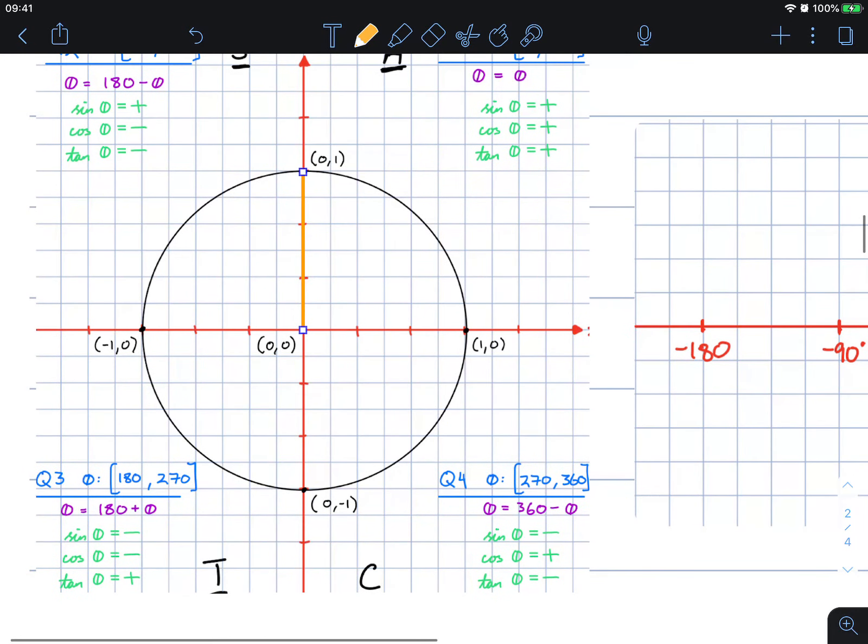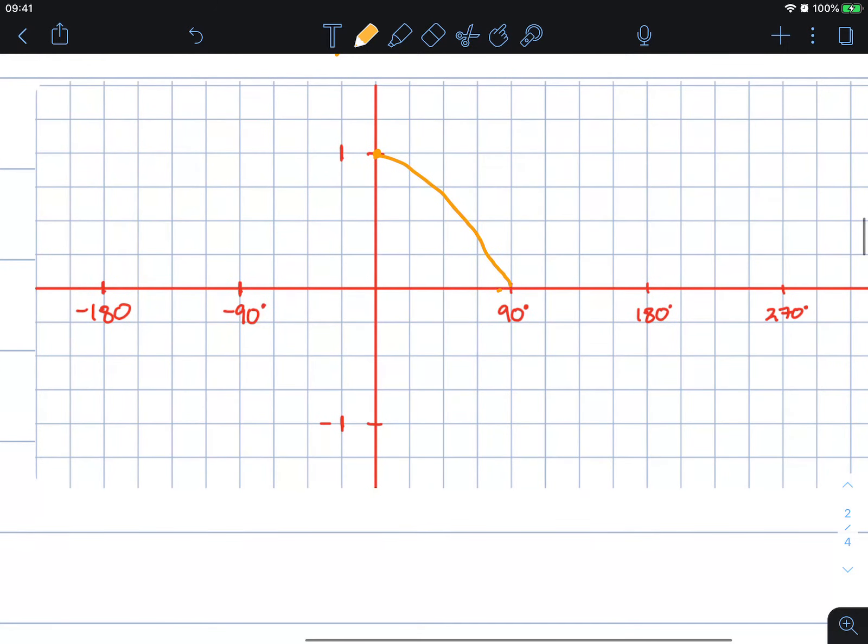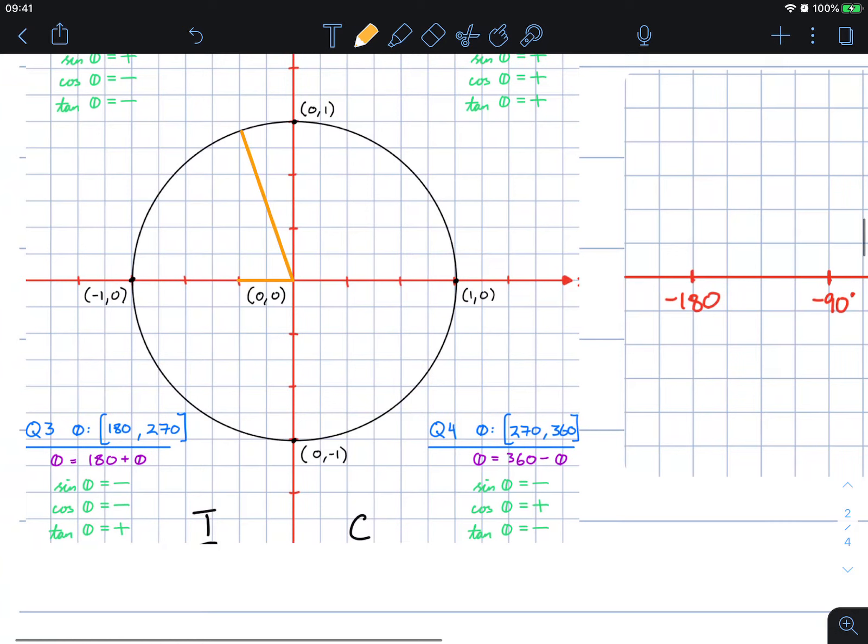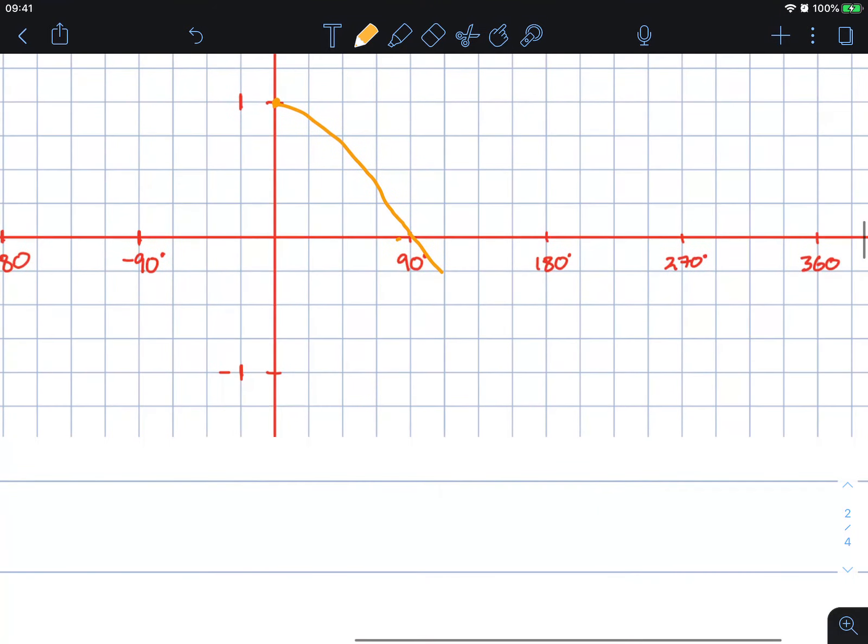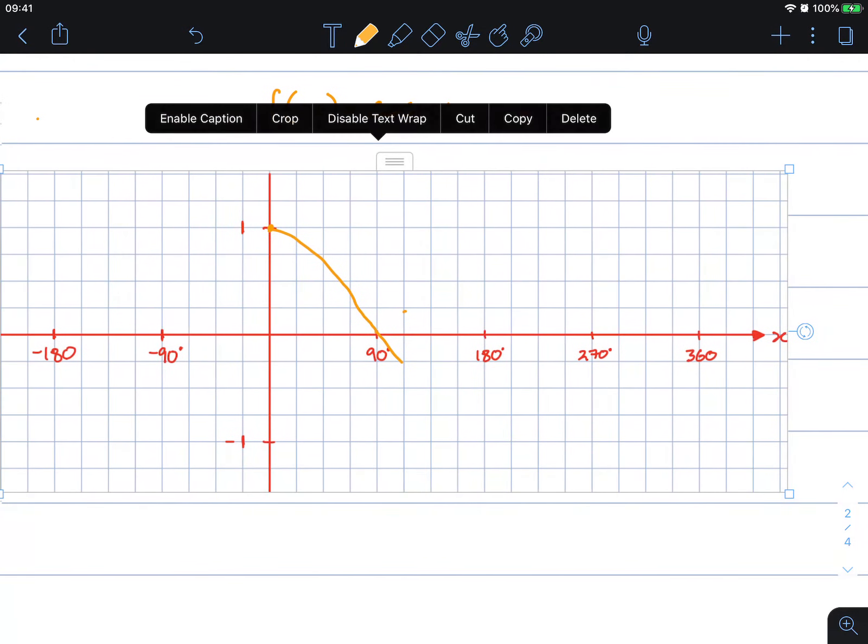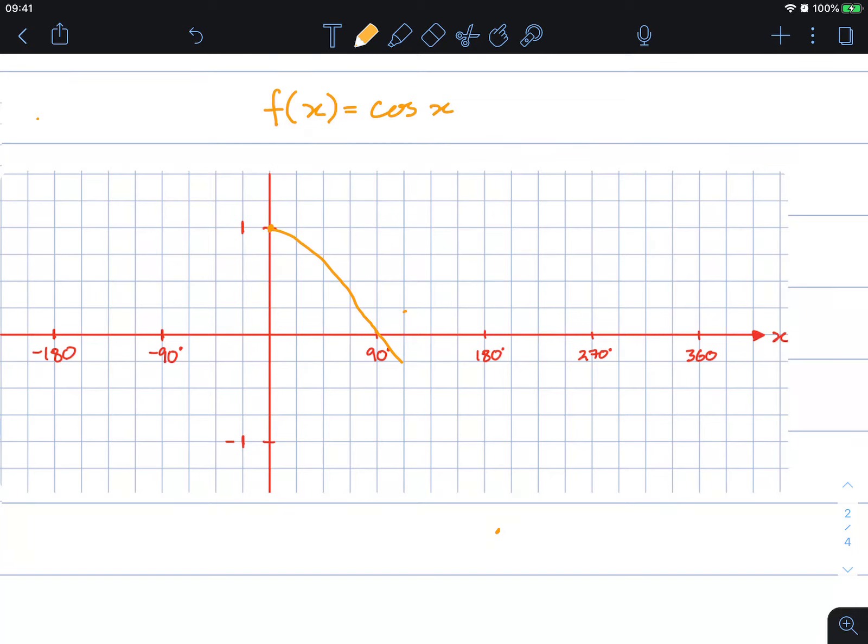Now when we go from 90 degrees to 180 degrees, what do you notice about the length of x? When it's here for example, the length of x here is actually negative, hence why it's going to go below the x-axis until it hits 180 degrees. At 180 degrees the length of x is actually negative one. So negative one is here when x is 180 degrees, the function cosine of x is negative one, hence why it'll curve down like this.